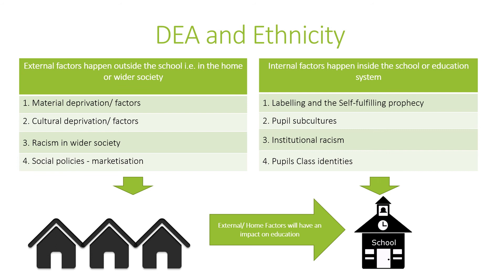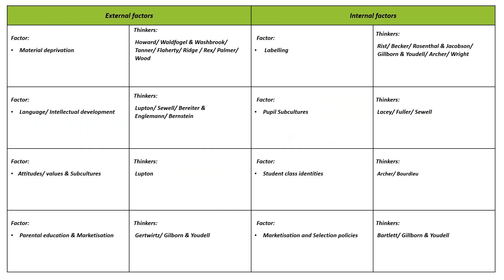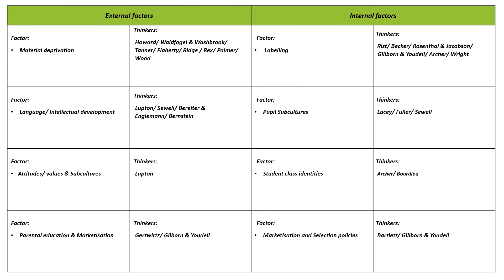DEA and ethnicity follows a similar pattern to class — material deprivation, cultural deprivation and the impact of marketisation policies are the same external factors. The new addition is racism, which causes material deprivation and cultural deprivation through lack of employment opportunities that disadvantage ethnic minority students. Inside school, factors include labelling, pupil subcultures, institutional racism within education, and pupils' class identity — where students' self-identity clashes with the values within education, creating barriers to learning. Many of the key thinkers are the same as for social class.